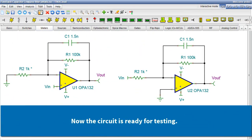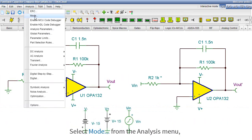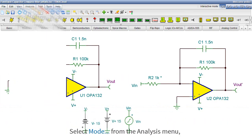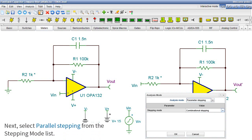Now the circuit is ready for testing. In order to step R2, set Parallel Stepping in the Mode dialog under the Analysis menu. This will step both R2 resistors parallelly. Select Mode from the Analysis menu, then in the Analysis Mode dialog, select Parameter Stepping from the list. Next, select Parallel Stepping from the Stepping Mode list.